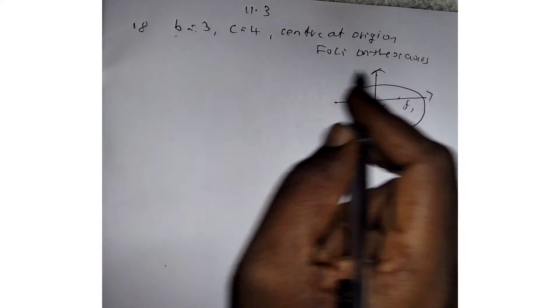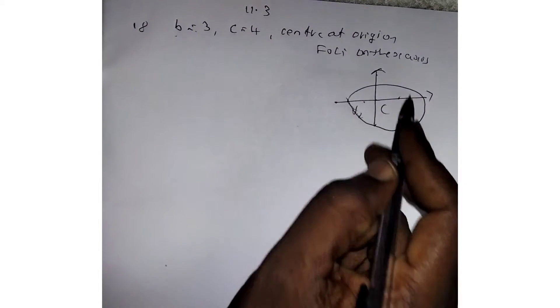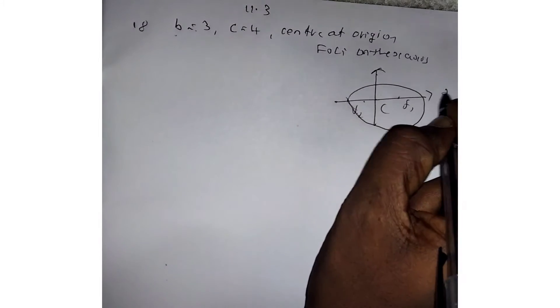So from this, we conclude that the ellipse is parallel to the x-axis. The ellipse lies along the x-axis.